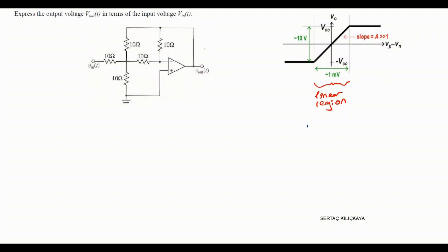Hello, my dear learning partners. In this video, I'm going to solve a question including an ideal op amp. Firstly, let me briefly explain what an op amp is. An op amp is an amplifier, as the name suggests — operational amplifier. If we give it an input, it amplifies the input and gives an output.